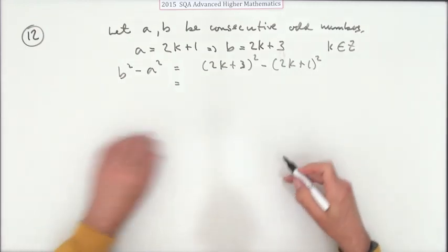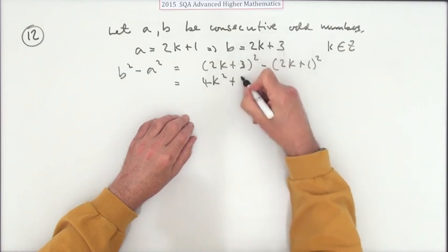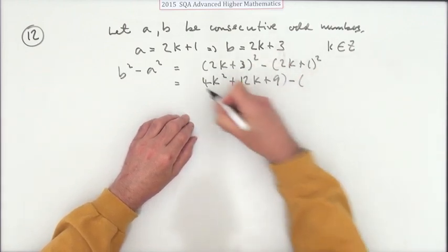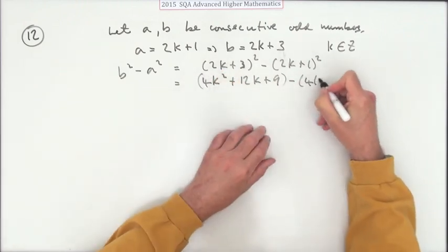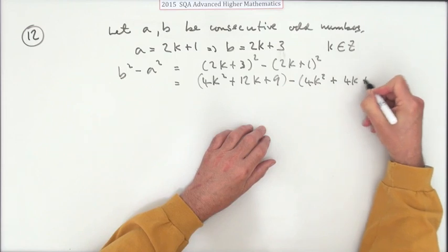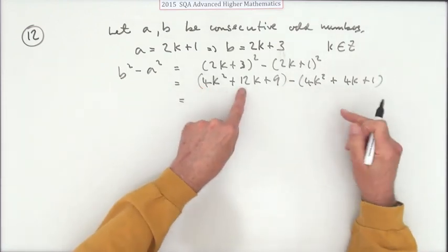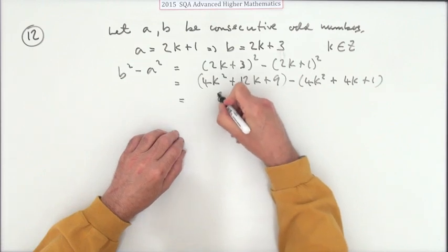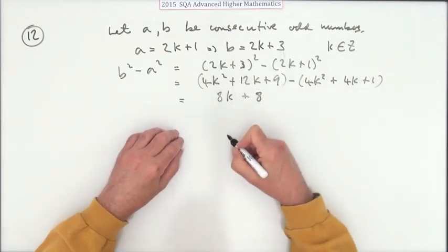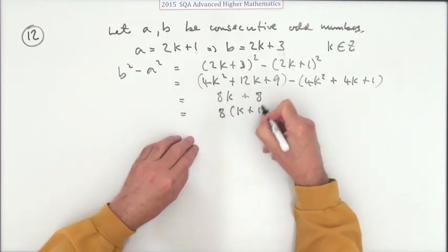Note you could also use 2K minus 1 as the convention. Expanding, we subtract (4K² + 4K + 1). Subtracting, the squared terms cancel: 12K take away 4K is 8K, and 9 take away 1 is 8. So that gives us 8K + 8, which is 8 times (K + 1).